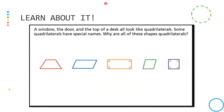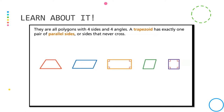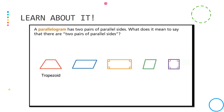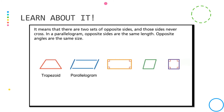Some quadrilaterals have special names, and they are all polygons with four sides and four angles. A trapezoid has exactly one pair of parallel sides — sides that never cross. A parallelogram has two pairs of parallel sides, meaning two sets of opposite sides that never cross. In a parallelogram, opposite sides are the same length and opposite angles are the same size.